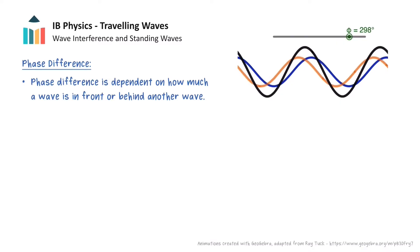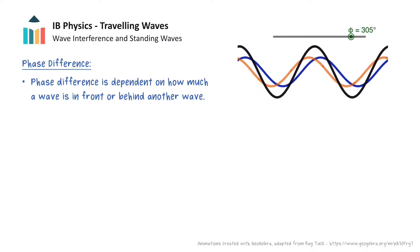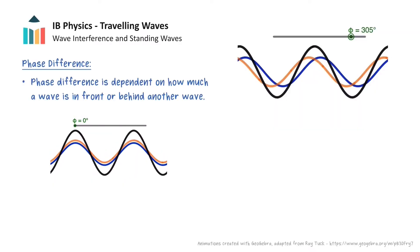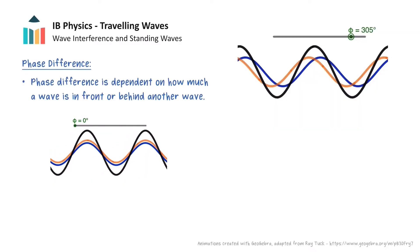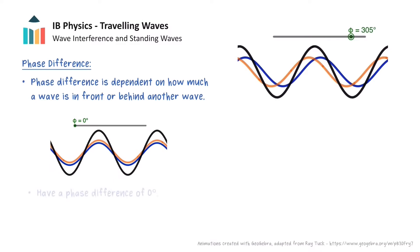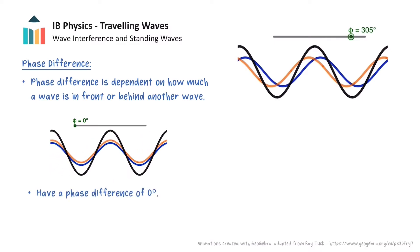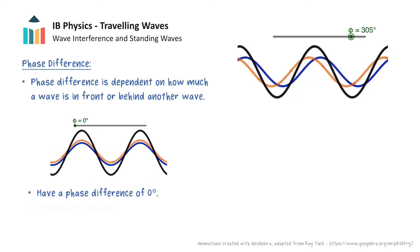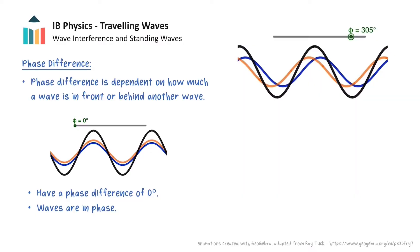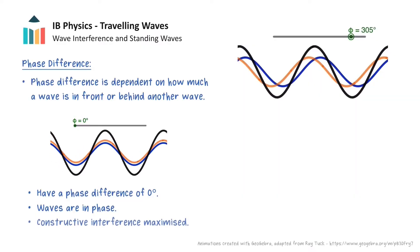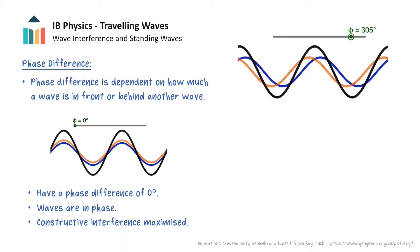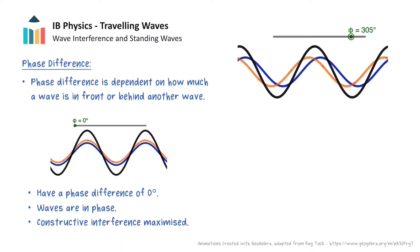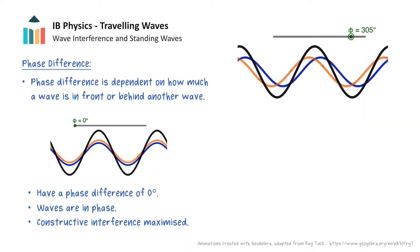Now there are two scenarios of particular note. The first one occurs when the two waves are aligned with each other. Here the simple harmonic oscillations of the particles of the two waves have a phase difference of zero degrees, and the waves are at the same point in their cycles at the same time. So the waves are said to be in phase with each other, and constructive interference of the waves will be maximised when the waves are in phase. As a side note, a phase difference of 360 degrees is equivalent to a phase difference of 0 degrees.